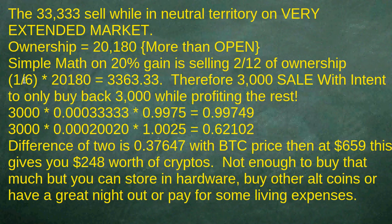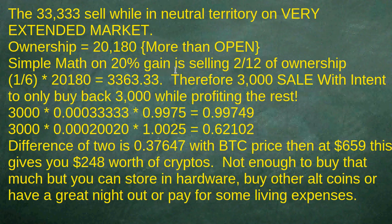So if I take one-sixth — which is the same as two-twelfths — and multiply the ownership, I get a number of around 3,360, so I can round it down a bit. If I'm buying 4,680 I could have bought 4,691, so I'll lower it. 3,000 would be how many I can sell, with intent only to buy back 3,000 while profiting the rest. Selling 3,000 at 33,000 satoshi at a quarter percent rate gives you 9.9749.